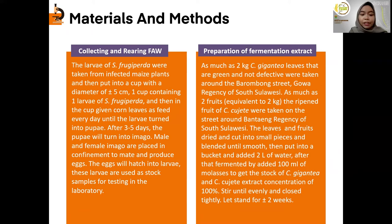Next, preparation of the fermentation extract. Each leaf of C. gigantea and fruits of C. dujete, as much as 2 kg, are dried and cut into small pieces, then blended until smooth. The mixture is put into a bucket and 2 liters of water are added. After that, fermentation is carried out by adding 100 ml of molasses to obtain the stock of C. gigantea and C. dujete extract at a concentration of 100%. Stir until evenly mixed and close tightly. Allow to ferment for around 2 weeks.